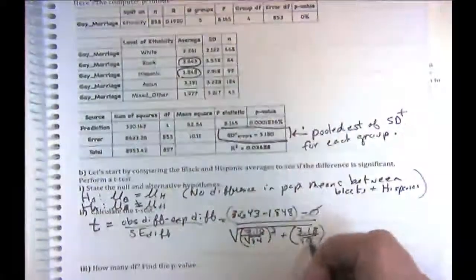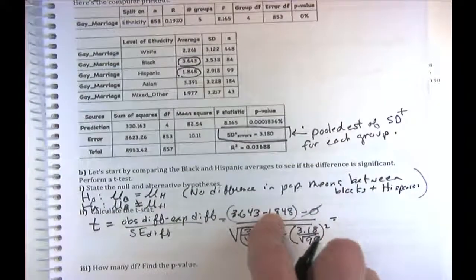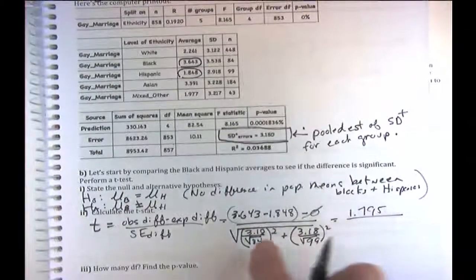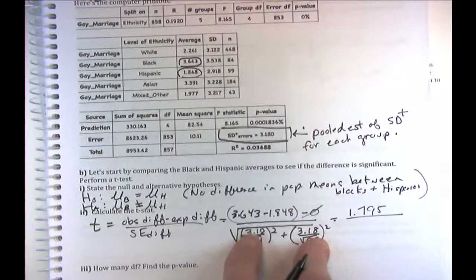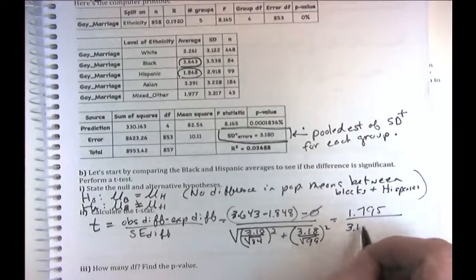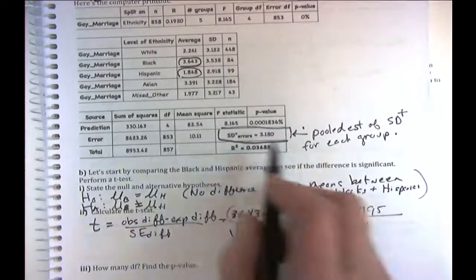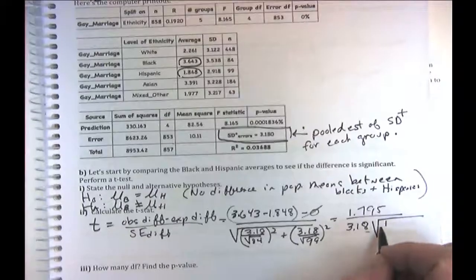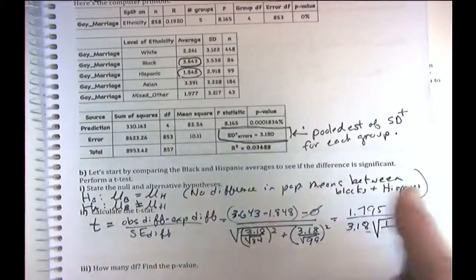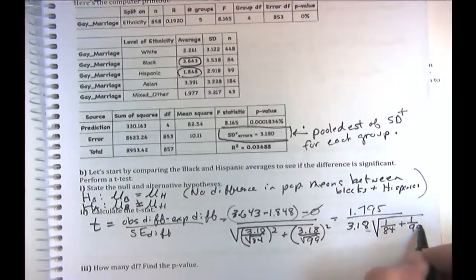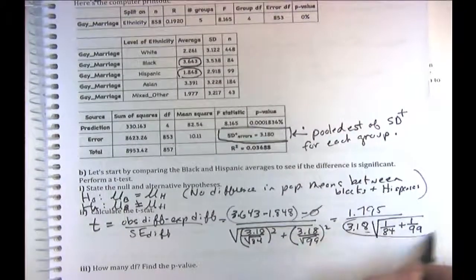To understand the Bonferroni correction mathematically: with 10 comparisons each tested at alpha equals 0.05, the probability of at least one significant result when the null is true is 1 minus 0.95 to the 10th power. That turns out to be 40%, not 5% — effectively setting our significance level at 40%, which is far too lenient.